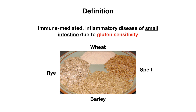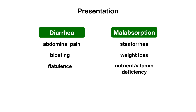When patients with celiac disease are exposed to one of these grains, they will oftentimes present with a variety of symptoms. The most classic symptoms include diarrhea and malabsorption. The diarrhea is chronic in nature, and patients can also have symptoms like abdominal pain, bloating, and flatulence along with this.